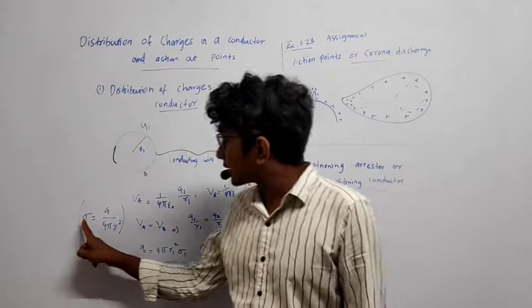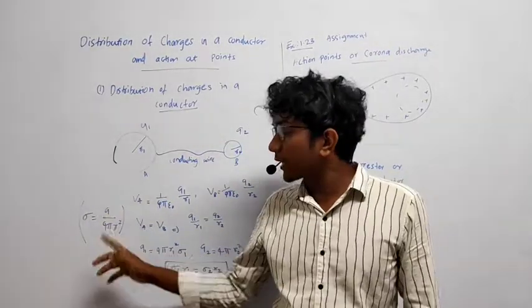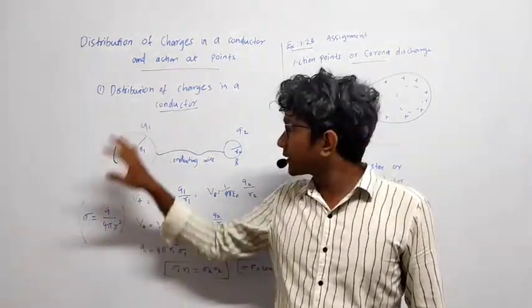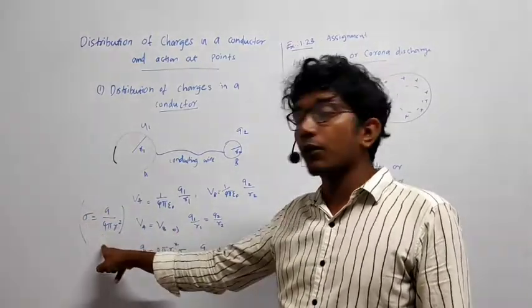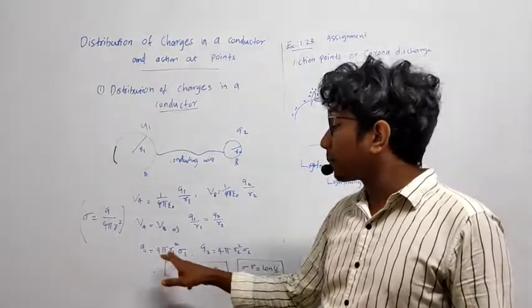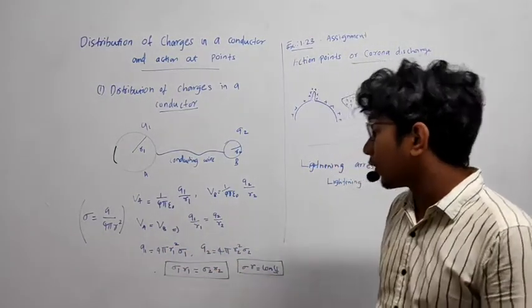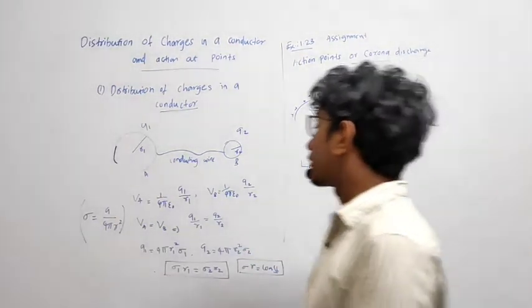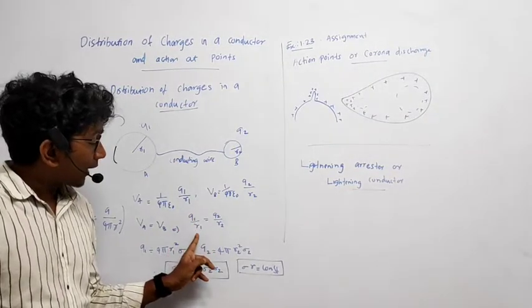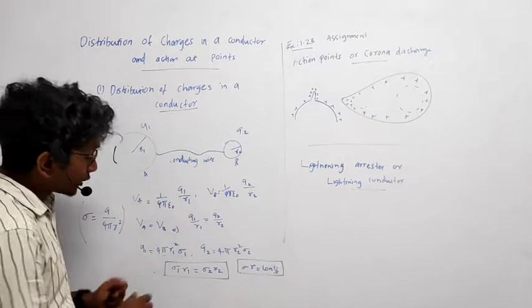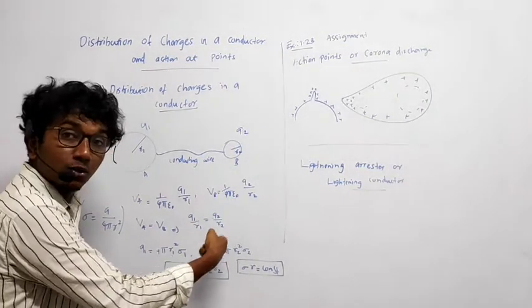Now, surface charge density σ is equal to charge divided by area, so Q = σ × 4πR². Therefore Q1 = σ1 × 4πR1² and Q2 = σ2 × 4πR2². Substituting Q1 and Q2 into the equation Q1/R1 = Q2/R2, the 4π cancels and R1 and R2 cancel as well.